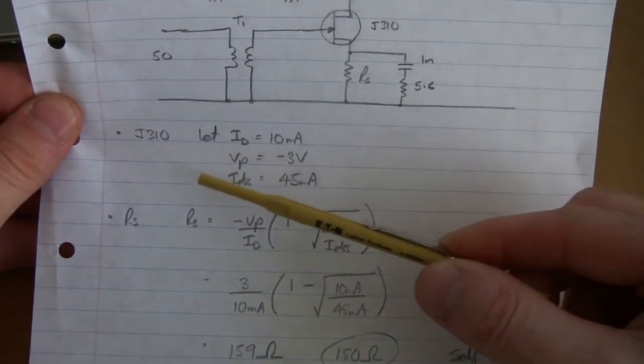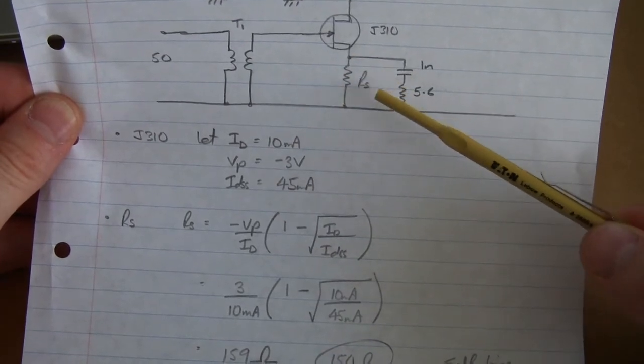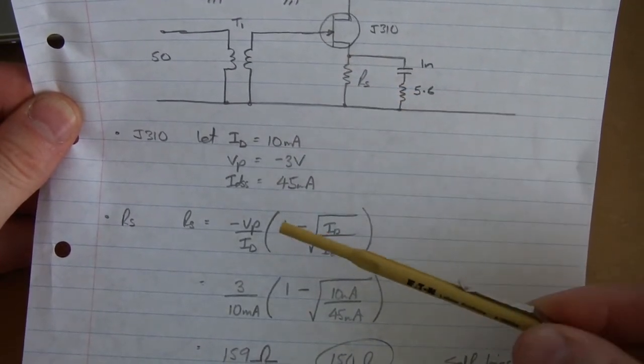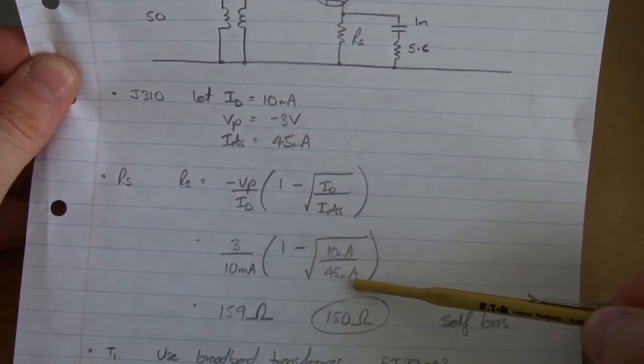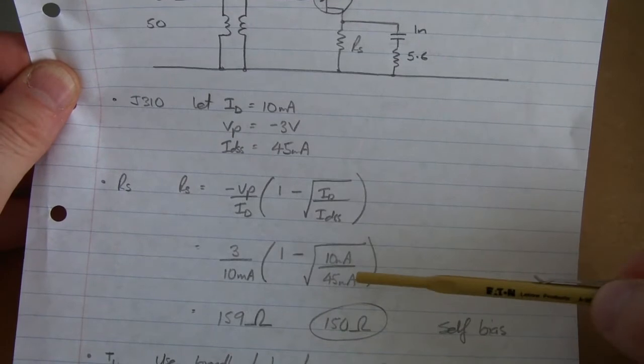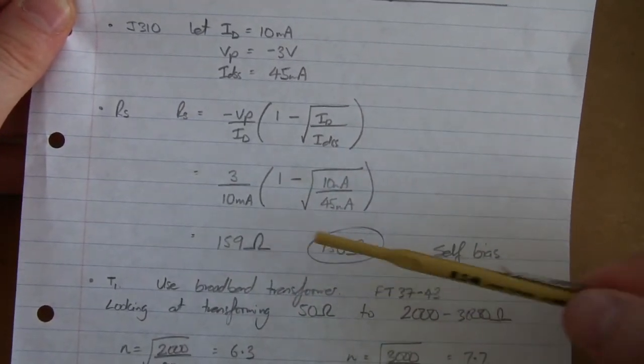We've got a pinch voltage of -3V and an IDSS of 45 milliamps. And by using this formula here, we can calculate the value of the self-biasing resistor in the source. So -VP over ID, one minus square root ID over IDSS. So inserting those values into that, we come up with this,